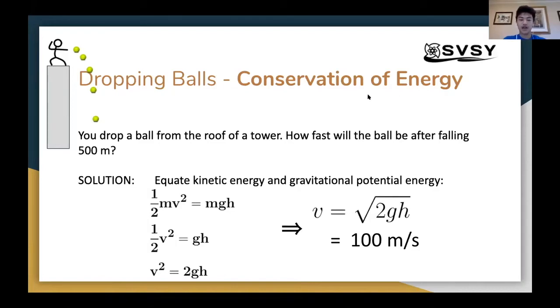An example of energy conservation would be if you drop a ball from the roof of a tower. This question describes a ball being dropped from the roof of a tower and asks, how fast will the ball be after falling 500 meters? You might remember kinematics. When we did problems similar to this, you could actually solve this with kinematic equations. If you remember delta x equals 1 half at squared, we could use that to solve this equation. But that would require unnecessary extra steps. We could use conservation of energy to make the solution a lot nicer.